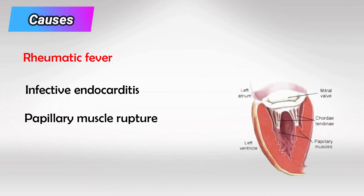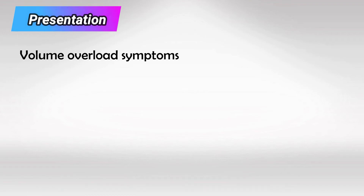Papillary muscle rupture can also cause acute mitral regurgitation. This presents with dyspnea, bibasilar crackles, and other volume overload symptoms.